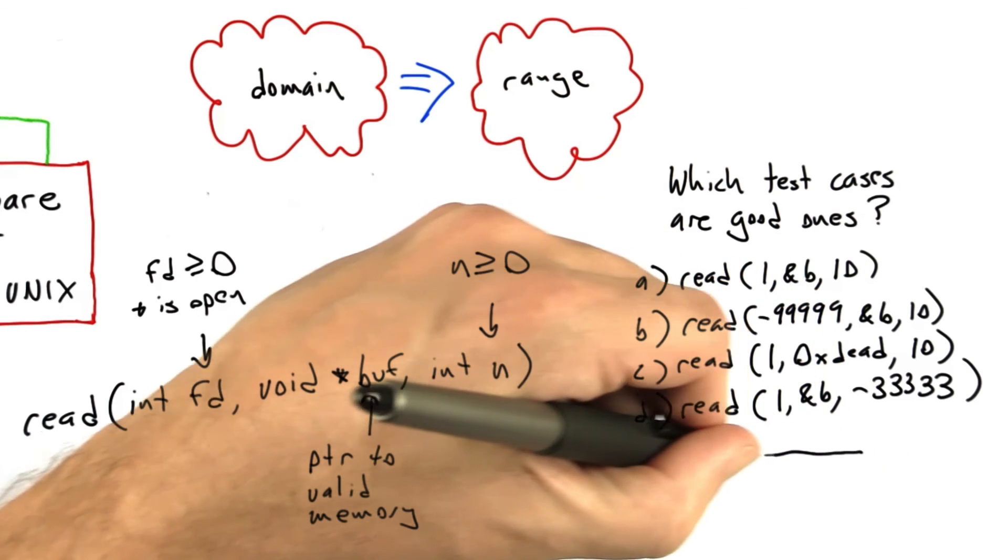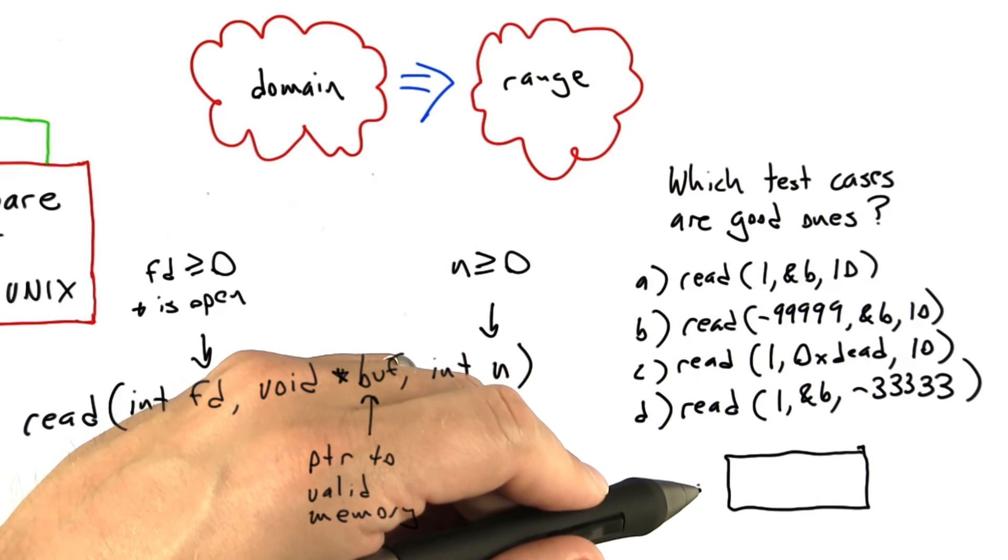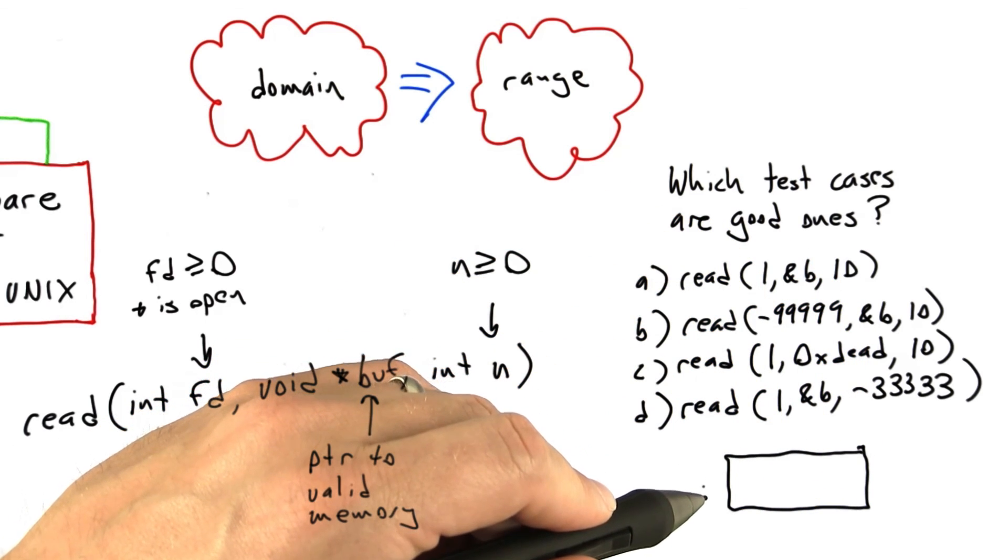So go ahead and write your answer. Write all of the test cases. Write the letters indicated, all of the test cases that you think are good ones for a Unix kernel in the space provided.